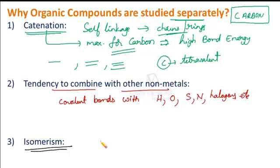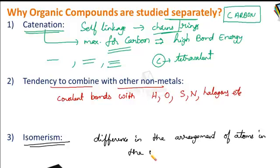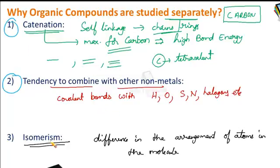Isomerism means some organic compounds can exist in more than one different structural form. It is a phenomenon arising due to the difference in the arrangement of atoms in the molecule, resulting in different structural compounds with the same molecular formula. We will discuss isomerism as a separate topic. These are the three main reasons why organic compounds are studied separately: first, catenation; second, the tendency to combine with other non-metals; and third, isomerism.